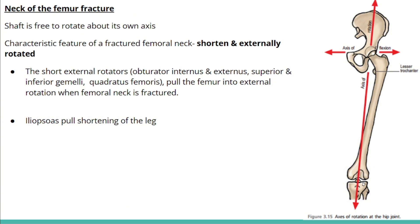Clinically, in a neck of femur fracture, the limb acquires a characteristic position of shortening and external rotation. This occurs because the femoral shaft is free to rotate on its own axis. The external rotation is due to the short external rotators in the gluteal region — obturator externus, superior and inferior gemelli, and quadratus femoris. The shortening happens because the iliopsoas muscle pulls the limb upward. So in a neck of femur fracture, the limb acquires a shortened, externally rotated appearance.